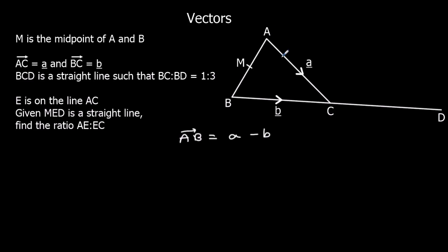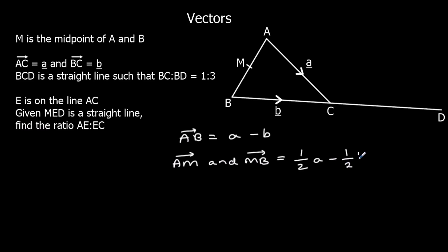Since M is the midpoint, A to M and M to B are each half of that journey: half a minus half b. BCD is a straight line and BC to BD is 1 to 3, so B to C is 1 part (called b) and B to D is 3 parts (3b). That means C to D must be 2b, since the whole journey BD is 3b.